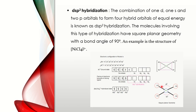Next, DSP2 hybridization. The combination of 1D, 1S, and 2P orbitals to form 4 hybrid orbitals of equal energy is known as DSP2 hybridization. The molecules involving this type of hybridization have square planar geometry with a bond angle of 90 degrees.